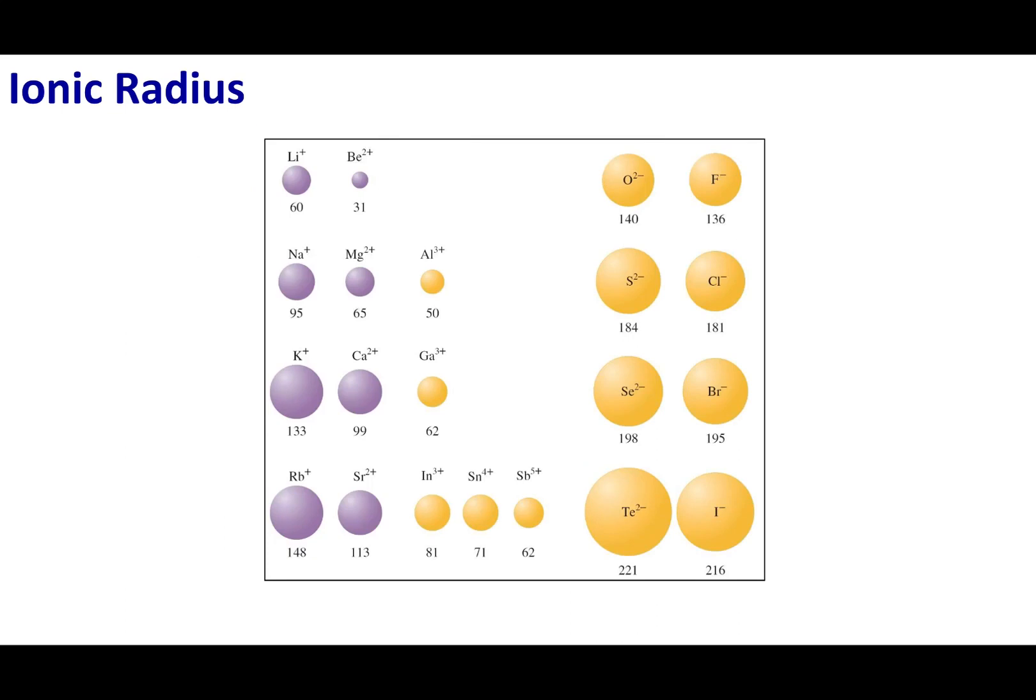This is the general trend when we look at ions. If I look at cations, what I will see is that cations have lost electrons. The protons are going to be the same, but the electrons are going to be less. So these electrons are pulled in tighter.